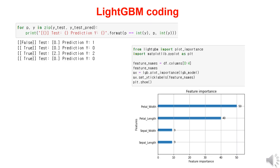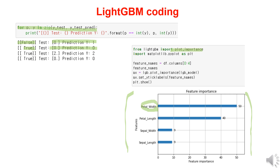You can create a simple code using a FOR loop to check whether the actual and predicted species match. As shown in this slide, if they match, it will display true; if they don't, it will display false. Additionally, you can use the plot_importance command to visualize the importance of the features. This shows that the width of the petal has the greatest impact on classifying the iris species. Based on the obtained results, we can also calculate precision, recall, and F1 score values, as well as obtain a confusion matrix. Reviewing previous videos on the confusion matrix might be helpful for understanding.